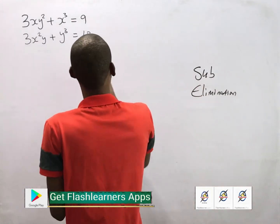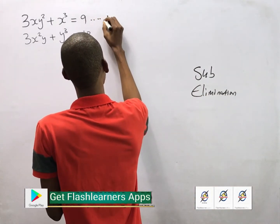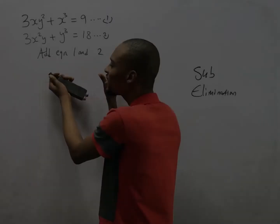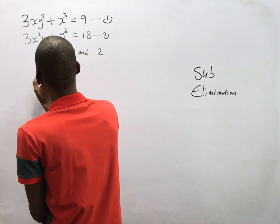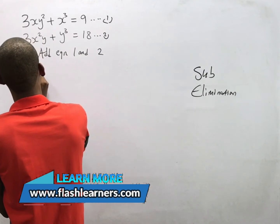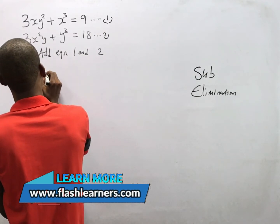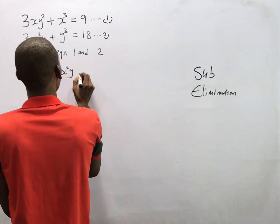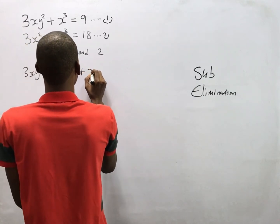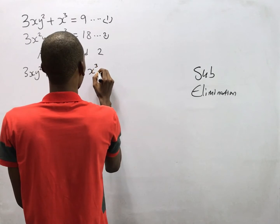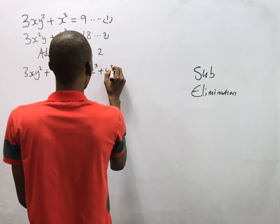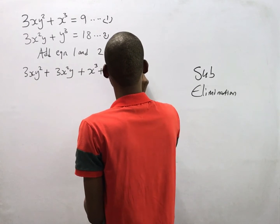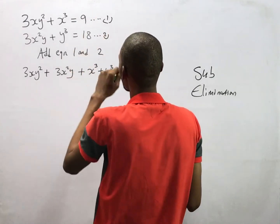What we do is first label the equations — call this equation one and this equation two. Adding the equations, we simply have 3sy² + 3s²y + s³ + y³ = 27, that is 18 plus 9.